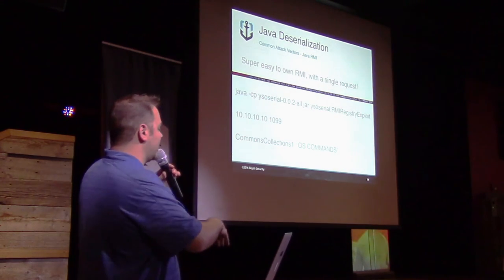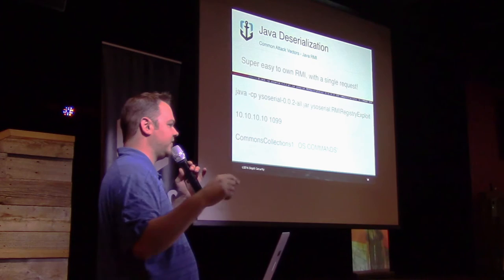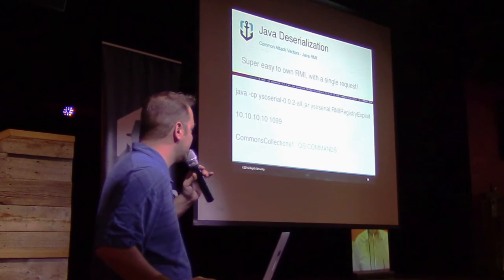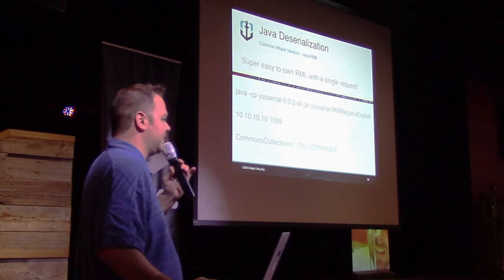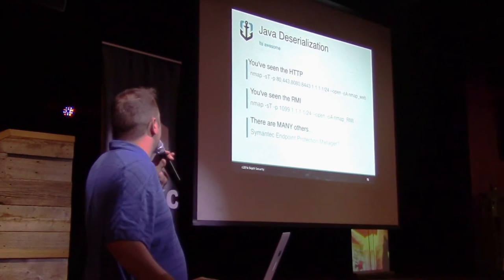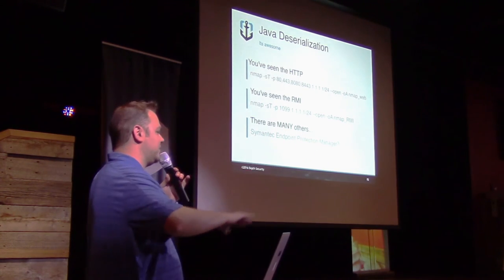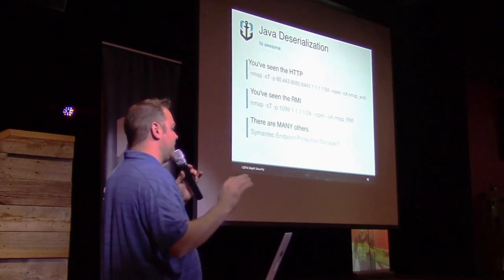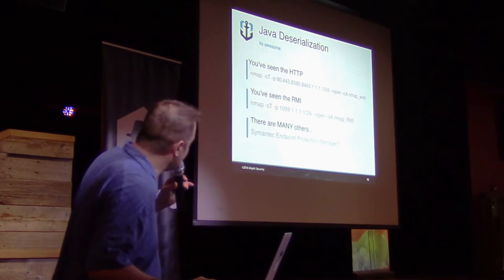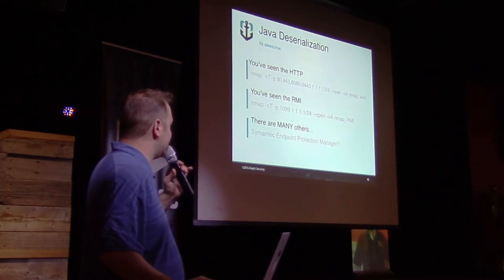In the newer YSO Serial packages, it keeps evolving because they keep finding new vectors for command execution across many different platforms. You've got Spring, different versions of Java that had terrible implementations — there are 1, 2, 3, 4, 5 variants of just the Commons Collections libraries, and then others typically included in other applications. Java deserialization is awesome. I typically look for it first because I don't have to do a full Nessus scan or a port scan — I just look out and see what's there. I try and find JBoss servers and similar. There's your handy nmap command to find all the HTTP instances, and here's your handy nmap command to find all the RMI servers. And there are many others.